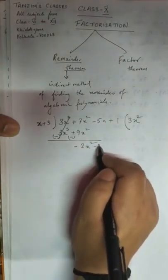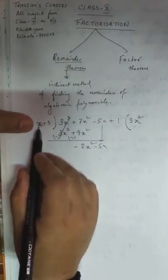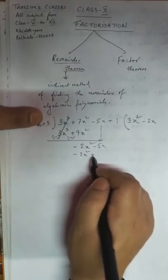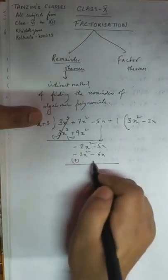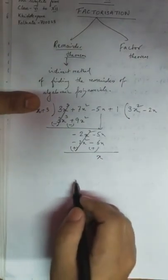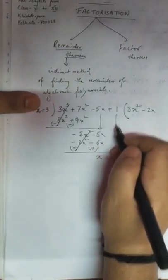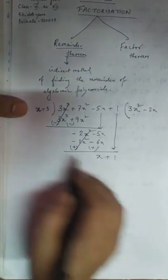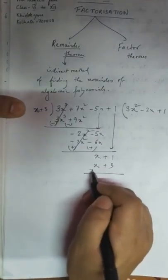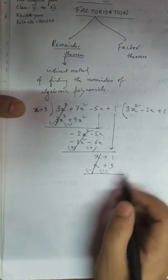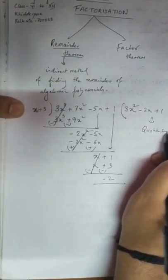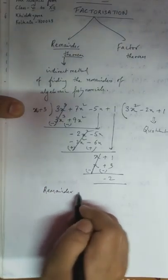We copy down minus 5x. Then x multiplied by minus 2x gives minus 2x², and plus 3 into minus 2x gives minus 6x. We change the sign, the first term cancels. Then minus 5x plus 6x gives plus x. We copy plus 1, x into 1 is x, plus 3 into 1 is plus 3. After changing signs, plus 1 minus 3 is minus 2. So the quotient is found and the remainder is minus 2.